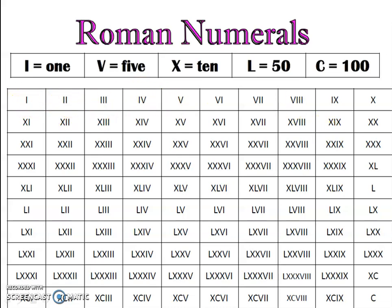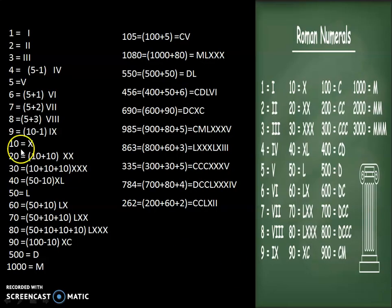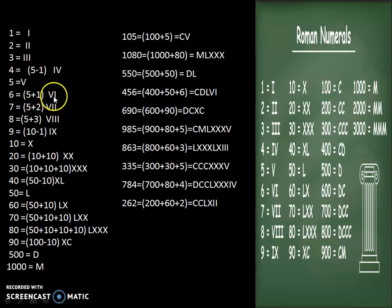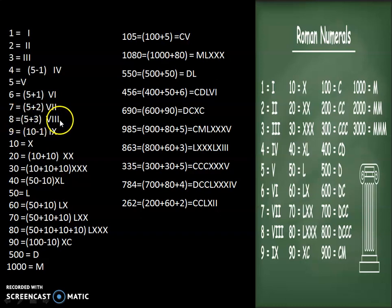Let's see how we can write these numbers. 1 is I, 2 is II, 3 is III, 4 is IV (5 minus 1), 5 is V, 6 is VI (5 plus 1), 7 is VII (5 plus 2, that is 5 plus 1 plus 1), 8 is VIII (V plus three I's), and 9 is IX.